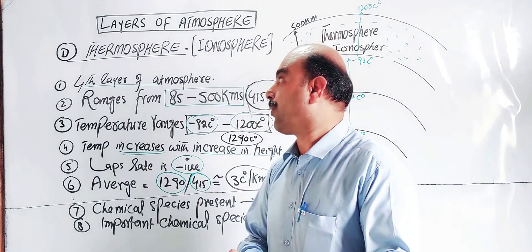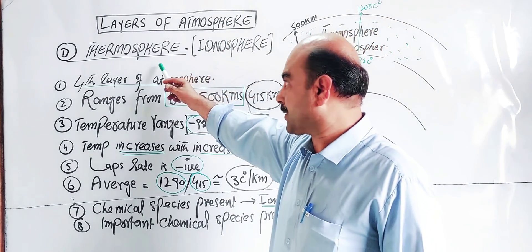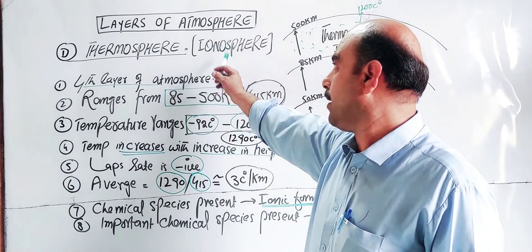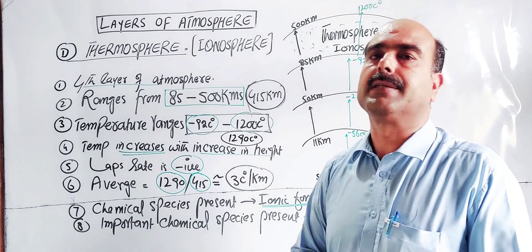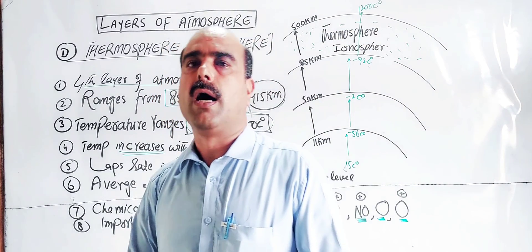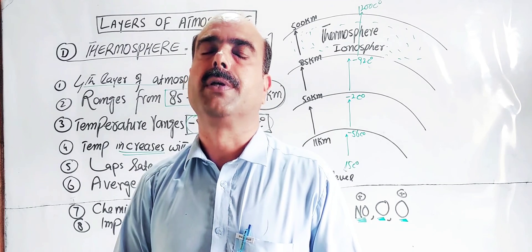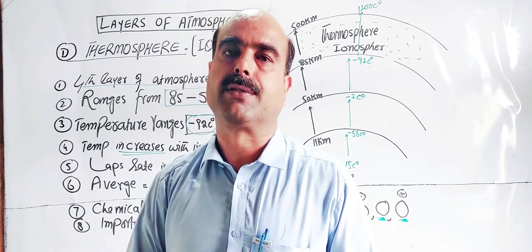So students, these were all about the fourth layer of the atmosphere which is thermosphere, also called ionosphere, and its characteristic properties. Thanks a lot for watching the video. I will be waiting for your comments, likes and shares. Thanks a lot again.